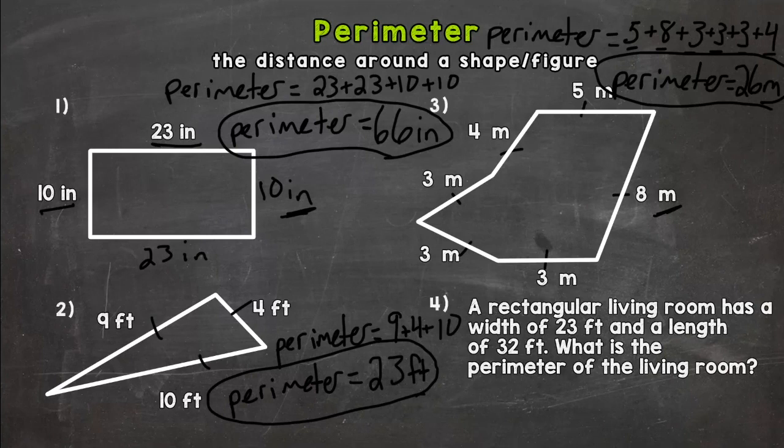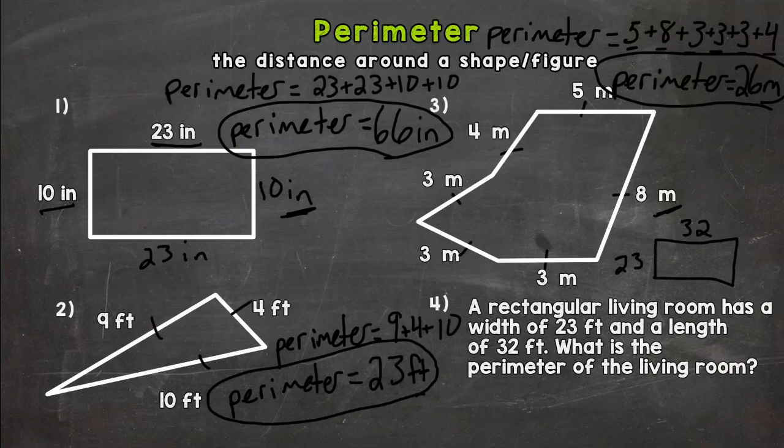All right, number four, we have a little word problem here. A rectangular living room has a width of 23 feet and a length of 32 feet. What is the perimeter of the living room? So I would suggest whenever you have a situation given, draw a picture in order to help us start this problem and make sure we have the correct answer and everything set up correctly. So it says rectangular living room. I'm just going to draw a rectangle here. Not perfect straight lines, but it will work. So it has a width of 23 feet and a length of 32 feet.